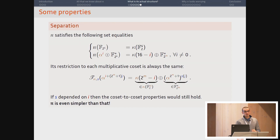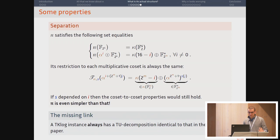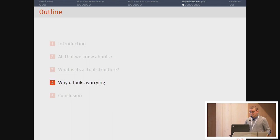If S depended on I somehow, you would still have this coset to coset property. It's not the case. So pi does not just map these multiplicative cosets to additive cosets. It's even simpler. It could do this in a more complicated way. It doesn't. Also, we can prove, and I'm not going to go over that, that this TK log structure explains both of the previous decompositions. The relationship between the TU decomposition and this log-based decomposition was extremely unclear to us. We were really puzzled by this thing. This decomposition explains it.